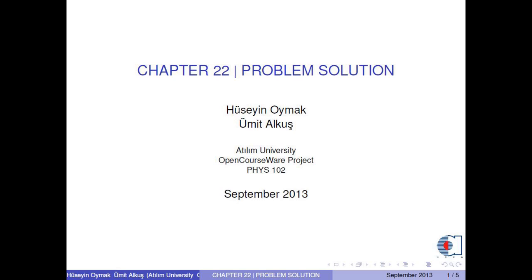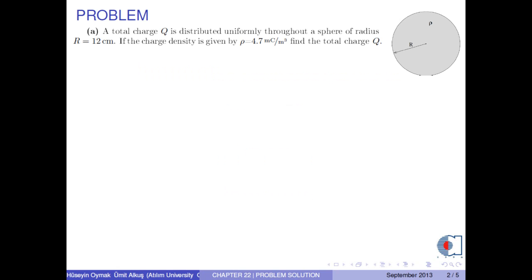Hello everyone, I am Ymitalkush. In this video, we will solve one problem in Chapter 22. A total charge Q is distributed uniformly throughout a sphere of radius r equal to 12 cm. If the charge density is given by rho equal to 4.7 mC per m³, find the total charge Q.